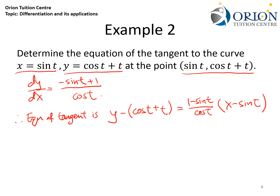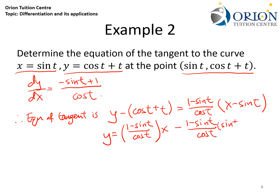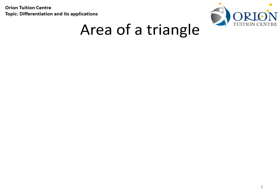If we rearrange, it becomes y equals (1 minus sin t over cos t) times x, minus (1 minus sin t over cos t) times sin t, plus cos t plus t. And this is the general equation of the tangent at any point on the curve.